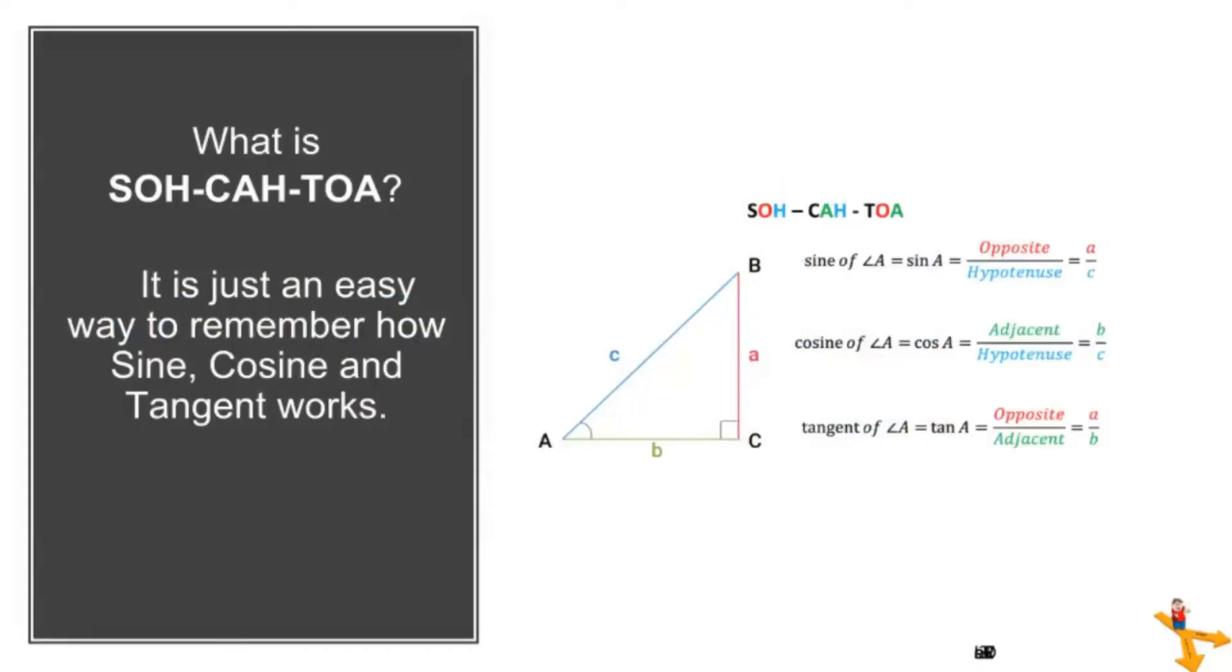Before we start, let us have a short review about SOH-CAH-TOA. We all know that it is just an easy way to remember how sine, cosine, and tangent works. For sine, it is always opposite over hypotenuse. For cosine, it is adjacent over hypotenuse. And for tangent, it is opposite over adjacent.